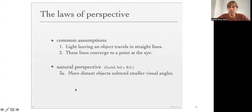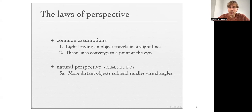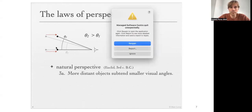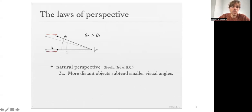Let's start with the basics: the laws of perspective. Common assumptions are that light leaving an object travels in straight lines, and these lines converge to a point in the eye. Already Euclid knew about natural perspective — the intuitive fact that more distant objects subtend smaller visual angles. Consider an observer and an object defined by two dots. As the object gets closer to the observer, the subtended angle increases. That's why theta 2 is larger than theta 1.